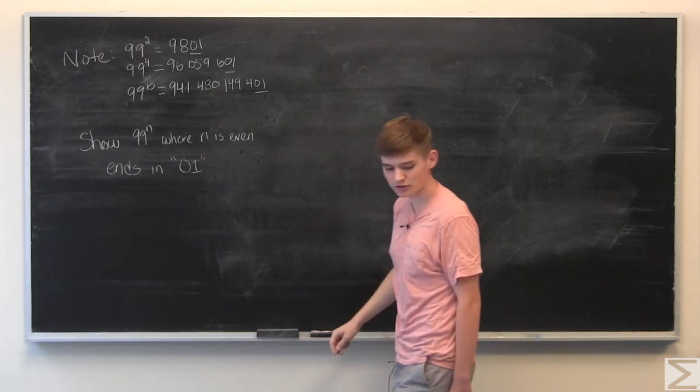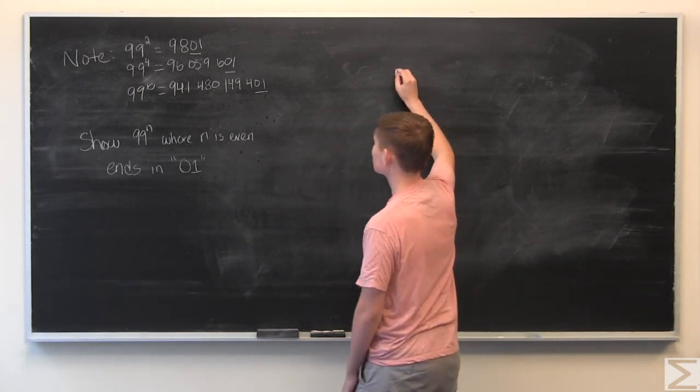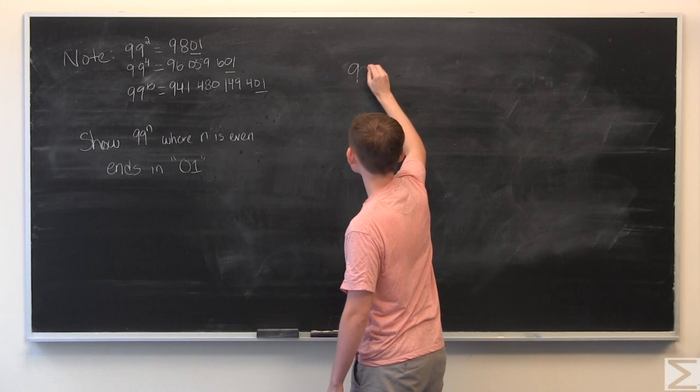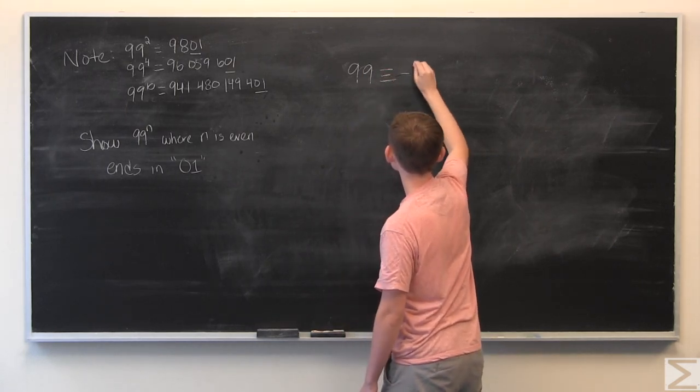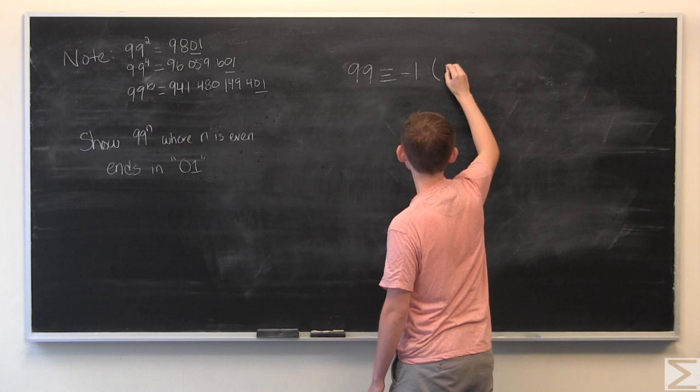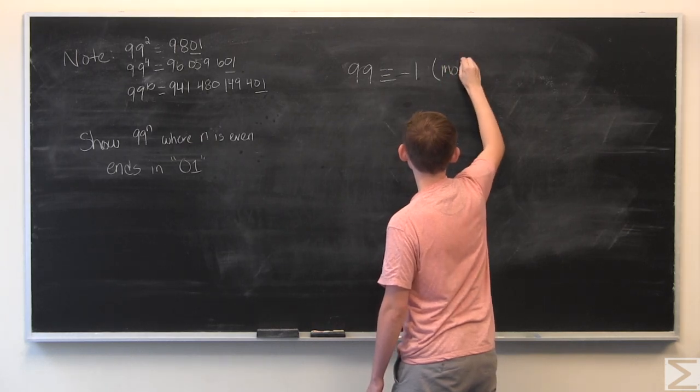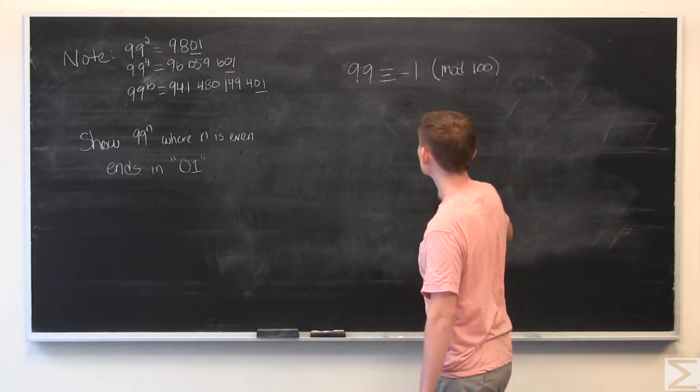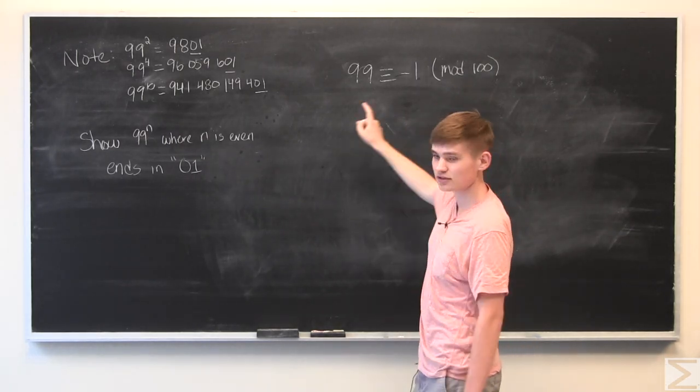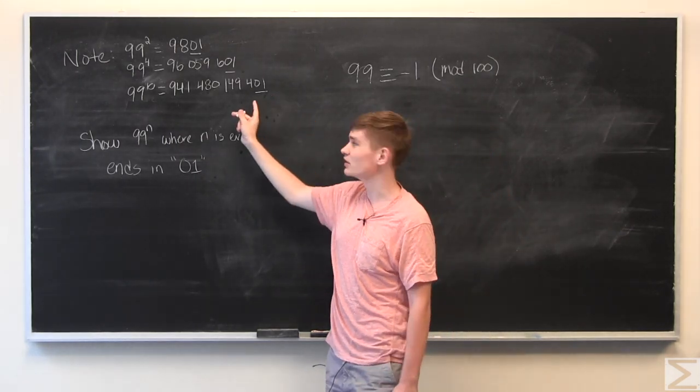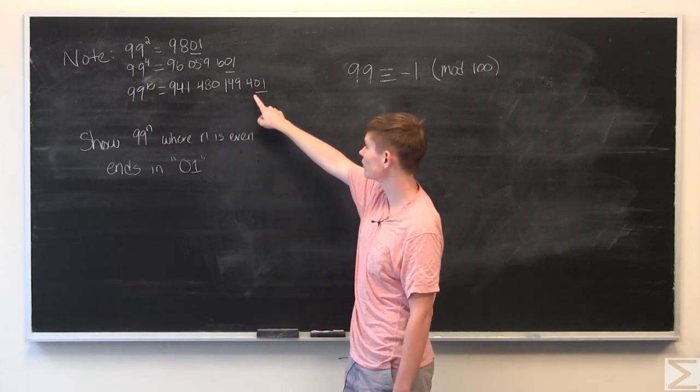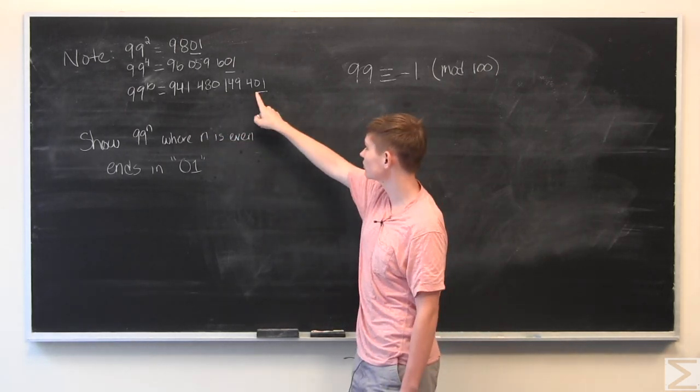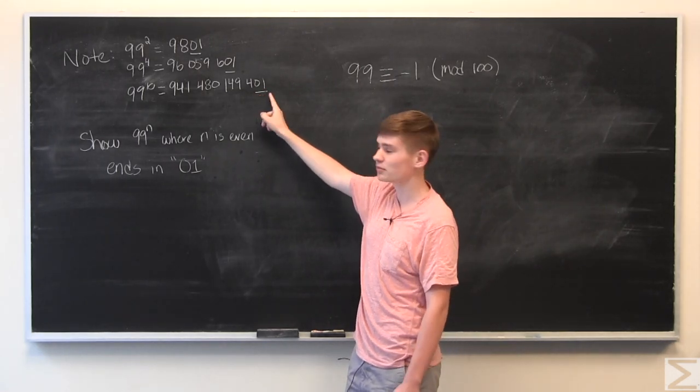And to do this we're going to use some modular arithmetic. So we can state the following that 99 is equivalent to negative 1 mod 100. And we're using mod 100 because our number system is base 10. So we know that whatever the number is mod 100 will be the last two numbers.